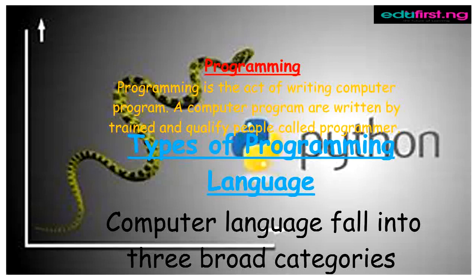We have types of programming language: number one is machine language, number two is low-level language, number three is high-level language.